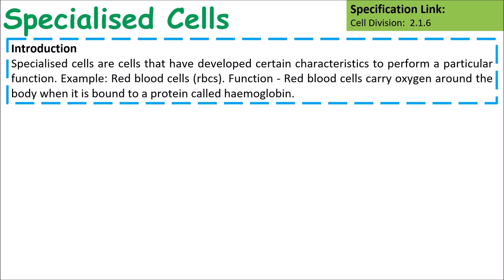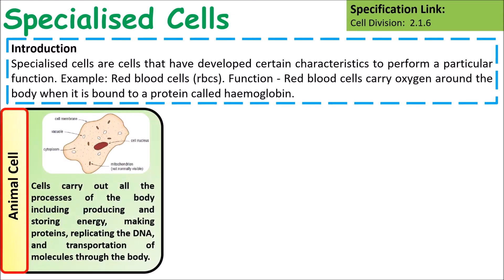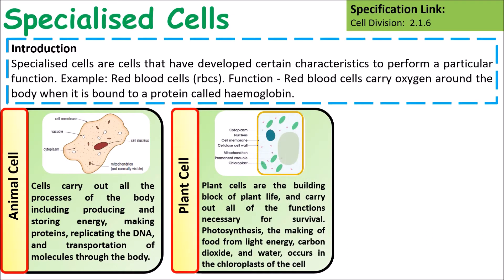Specialised cells are cells that have developed specialised characteristics to carry out certain functions. Three important things to remember: animal cells have a nucleus and cell membrane. Plant cells differ from animal cells because they have a cell wall, chloroplasts, and a large vacuole.